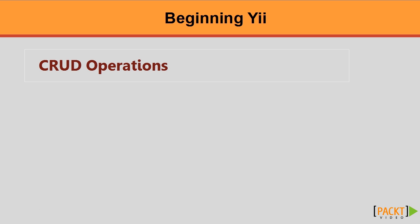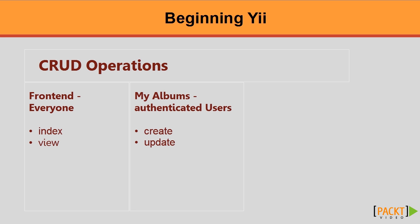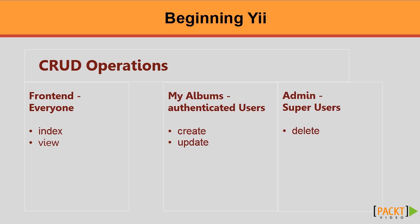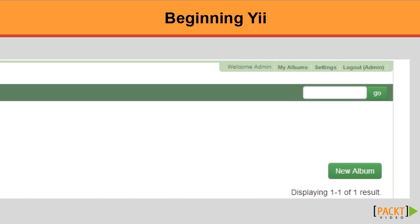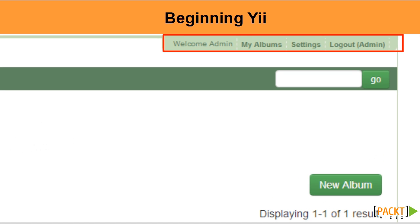A Yii application is split into CRUD actions for each data model. The basic functions, like list and view, are available to all users. The create and update functions are restricted to logged-in or authorized users, and the delete function is restricted to an admin-only user. In our application, we're going to use this structure to divide the front-end browsable website from the maintenance functions for data belonging to each individual user. For example, I'll be able to create, update, and delete my web albums, but only view yours.